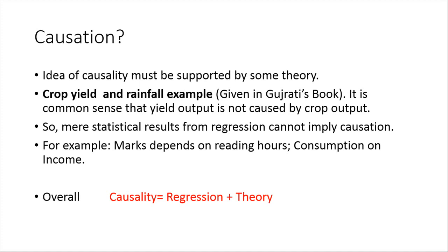A simple example given in Gujarati's book is the crop yield and rainfall example. As we know, crop yield is dependent on rainfall, but not vice versa — rainfall cannot be the dependent variable, and there should be no causality from crop yield to rainfall.